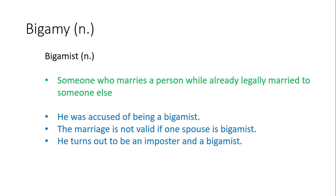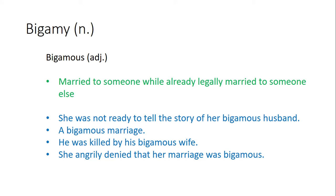Bigamist is someone who marries a person while already legally married to someone else. Examples: Number one, he was accused of being a bigamist. Number two, the marriage is not valid if one spouse is a bigamist. Number three, he turns out to be an imposter and a bigamist. The adjective form of bigamy is bigamous, meaning being married to someone while already legally married to someone else. Examples: Number one, she was not ready to tell the story of her bigamous husband. Number two, a bigamous marriage. Number three, he was killed by his bigamous wife. Number four, she angrily denied that her marriage was bigamous.